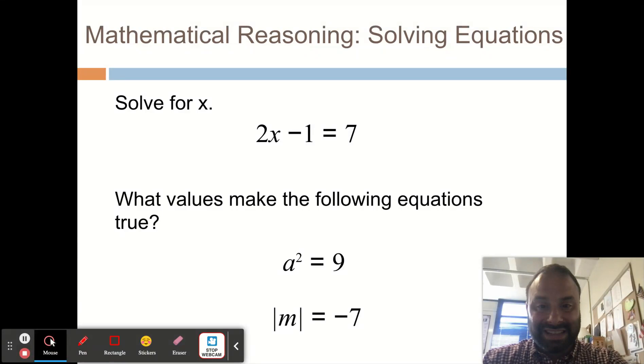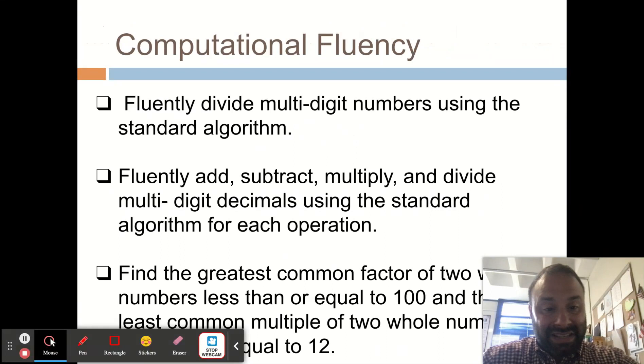So they might see things that are a^2 = 9. I'm looking for, do they understand that there might need multiple answers? For the absolute value of m = -7, I've given problems like this before, where students are trying to do all these different steps. My hope is that kids can keep their sense about them and say that there isn't an answer. So these are the kinds of things that we're looking for.